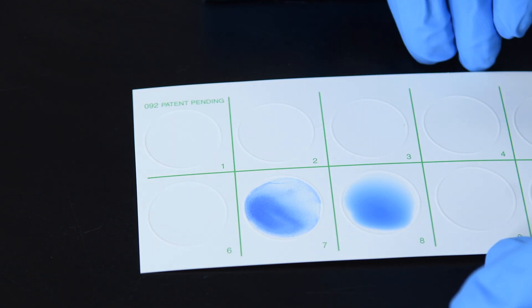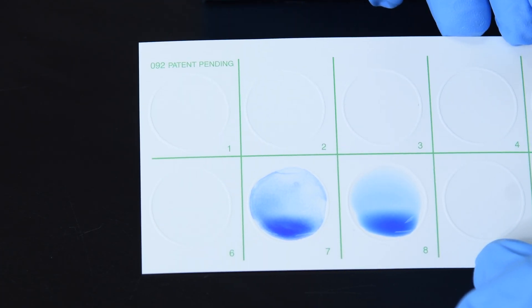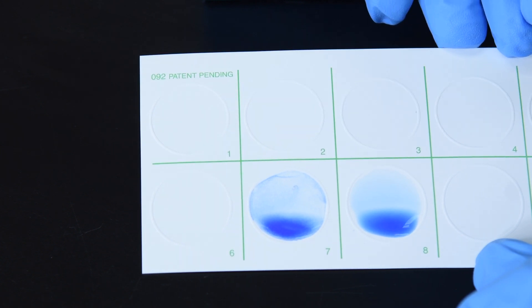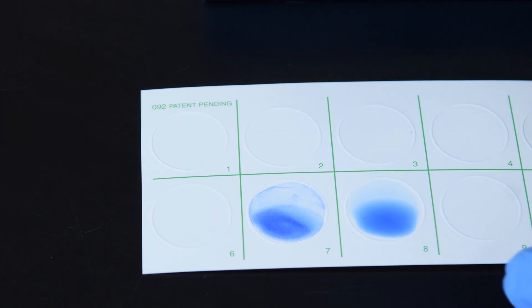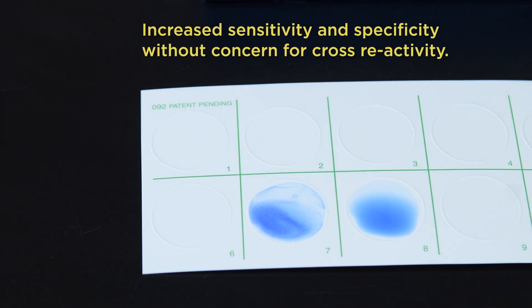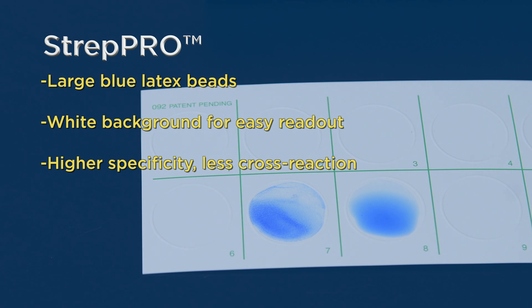Strep Pro is easier to read than most kits. The large blue carboxylated latex beads produce a clear-cut readout and result in increased sensitivity and specificity without concern for cross-reactivity. Also, the large blue latex beads on a white card make it especially easy to read.